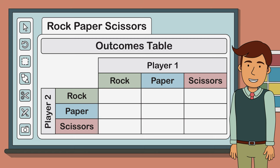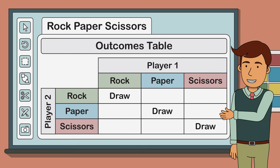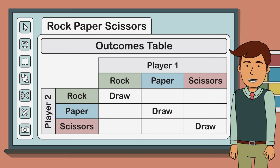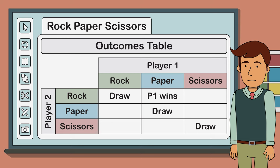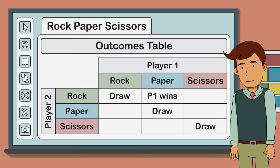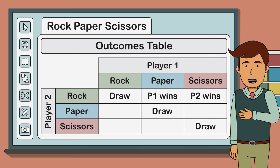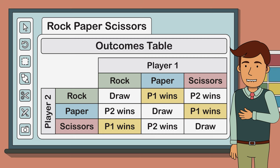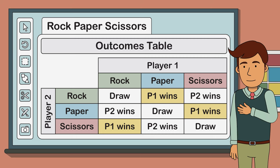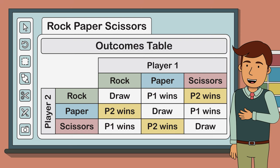Now, as mentioned, if both players choose the same hand gesture, then it's a draw. This creates a nice diagonal pattern across our table. If player one chooses paper and player two chooses rock, then player one wins. Let's fill it in. Now, if player one chooses scissors and player two chooses rock, then player two wins. Let's add the rest of the outcomes to our table. What you should notice is that there are three out of nine outcomes which result in a player one win, three out of nine which result in a player two win, and three out of nine which result in a draw.